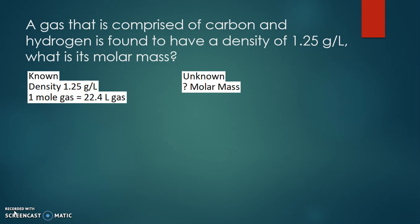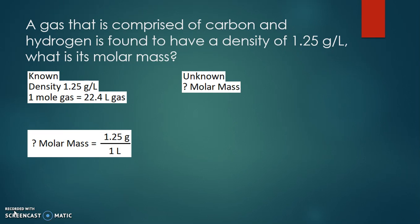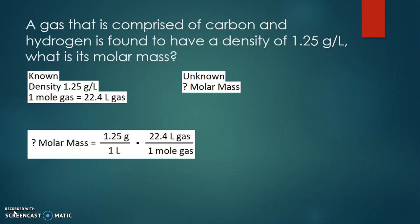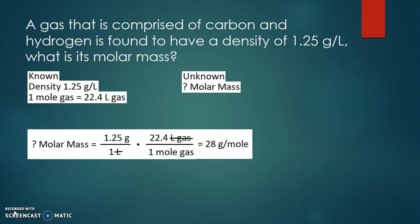Since we have grams per liter from the density, we can use 22.4 liters per mole to cancel out liters and get grams per mole. Writing 1.25 grams over one liter, we multiply by 22.4 liters over one mole. Liters cancel out, leaving grams per mole. Multiplying 1.25 times 22.4, we find this gas has a molar mass of 28 grams per mole.